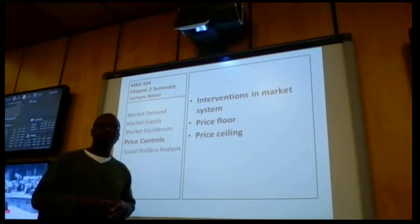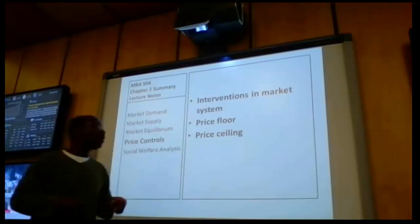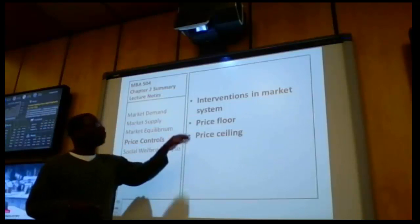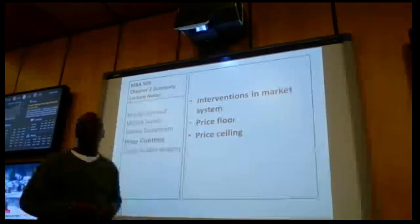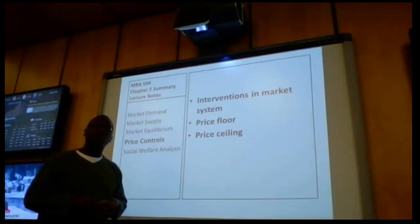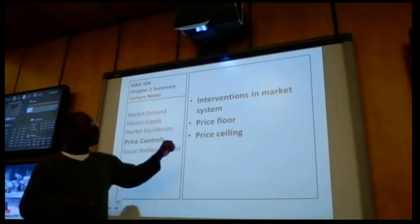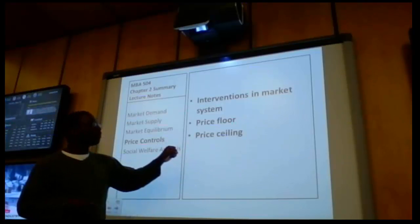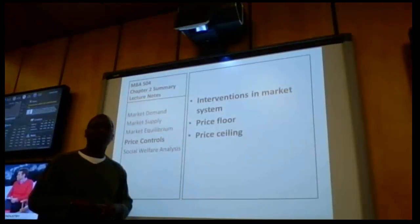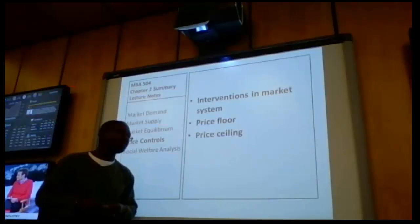I'm also going to introduce material not found explicitly in the textbook pertaining to price controls. Price controls are interventions in the market system — in other words, they do not allow the market system to work. They lead to economic inefficiency. We're going to diagram and talk about these two types of economic inefficiencies. There are two principal types of price controls: a price floor and a price ceiling. We're going to graphically illustrate both and talk about the economic consequences of each.